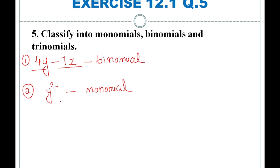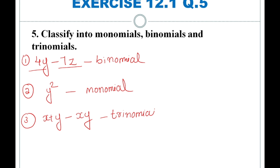An expression with only one term is called a monomial. Now the third expression is x plus y minus xy. This has three terms. An expression which contains three terms is called a trinomial. We separate the terms using plus and minus, giving us three terms — so we call it a trinomial.